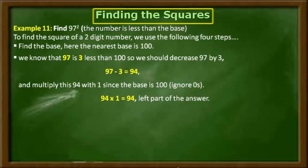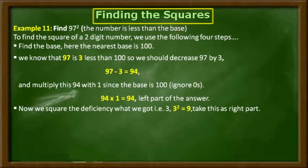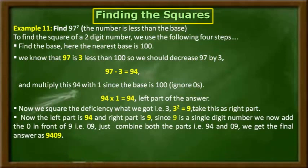Moving to step number three: we have to square the deficiency. The deficiency is 3, and by squaring 3 we get 9 as the answer, and we take this as the right part of the answer. Finally, coming to step number four: the left part is 94 and the right part is 9.